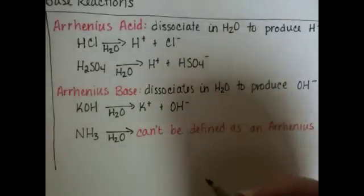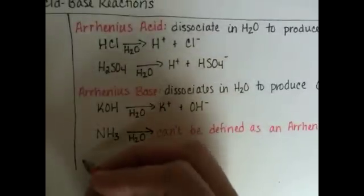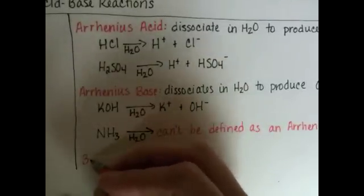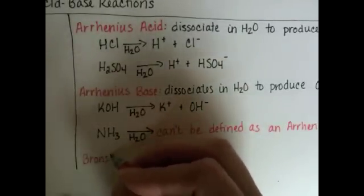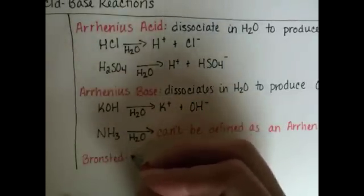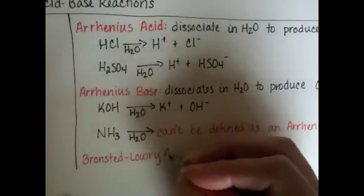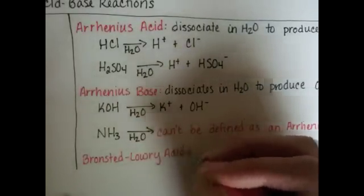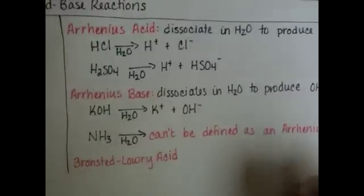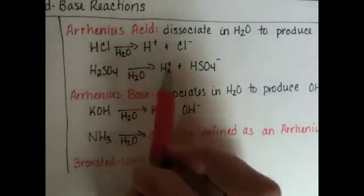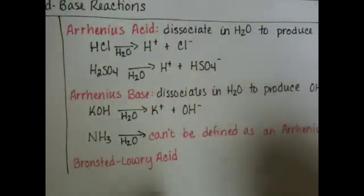The definitions that followed the Arrhenius acids and bases were the Bronsted-Lowry. The Bronsted-Lowry definitions were more inclusive, so they weren't limited to just substances that produced H+ and OH-.